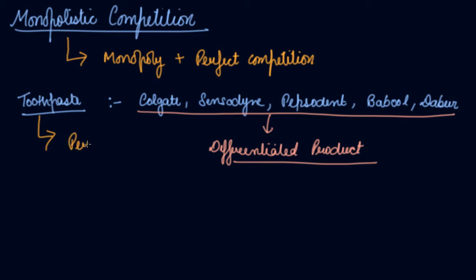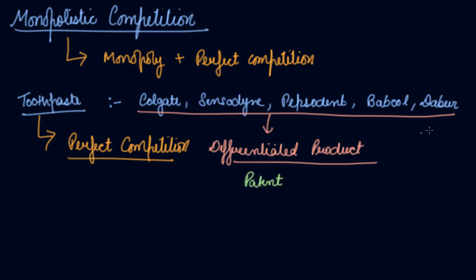You are selling toothpaste — this is the perfect competition aspect. But you are selling a differentiated product that can be differentiated from the others. You have patented your product. Dabur has patented its product and nobody can copy it — why their toothpaste is red, what ingredients they are using. So you patent your product and technology accordingly, which gives you the feature of monopoly.